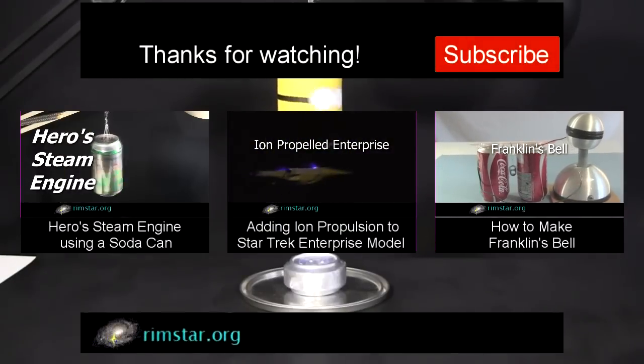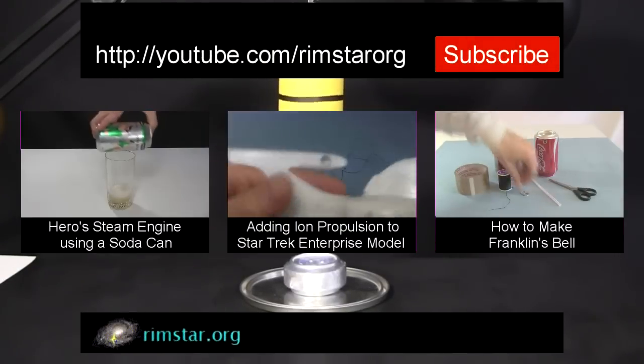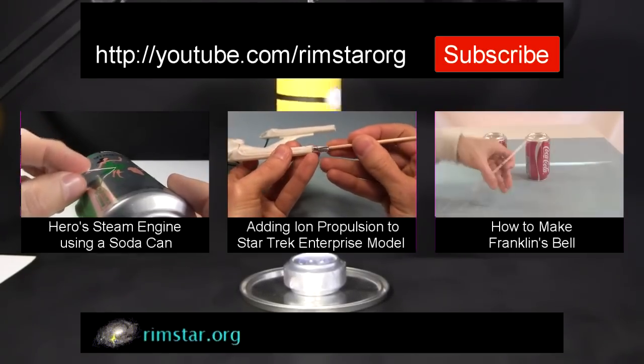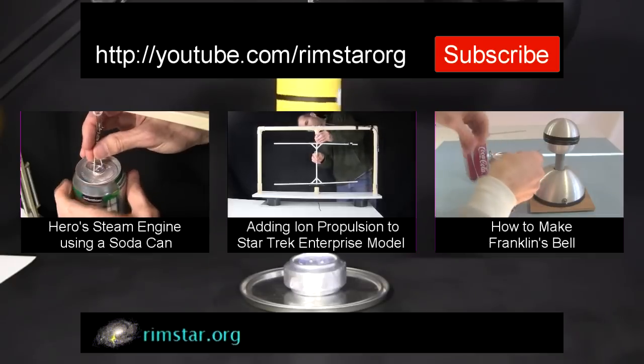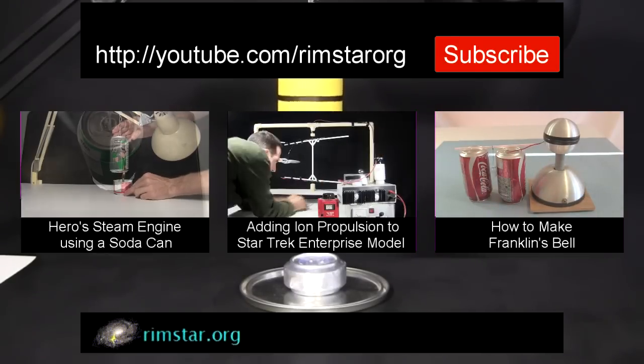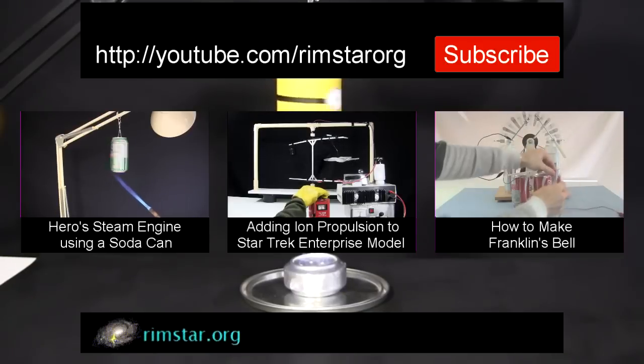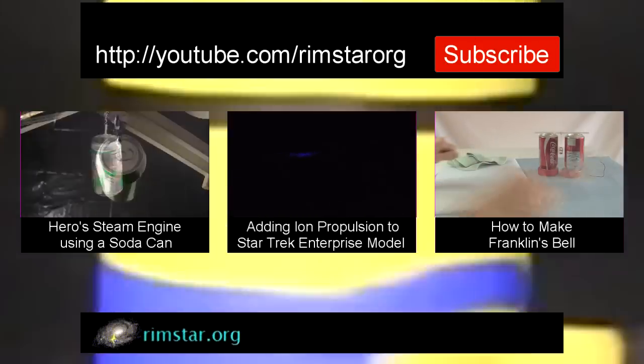Well thanks for watching, see my YouTube channel rimstar.org for more neat videos like this. That includes the one I mentioned all about Hero's steam engine, another about adding real ion propulsion to a Star Trek Enterprise model, and for more things to do with soda cans, one on how to make a Franklin's Bell. And don't forget to subscribe if you like these videos, or give a thumbs up, share with your social media, or leave a question or comment below. See you soon!